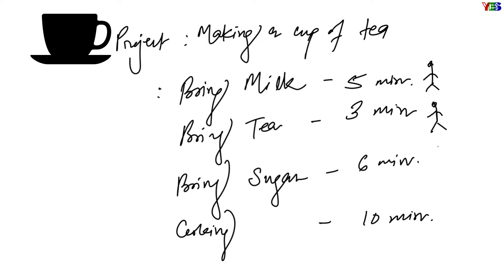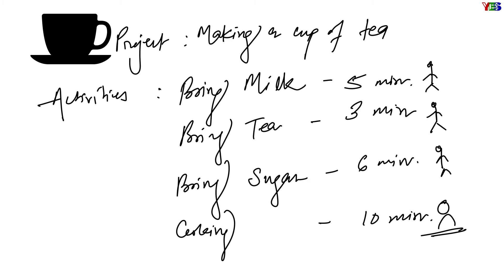Now let us consider 3 of your friends are helping you to complete this project. In this condition, it is clear that the 3 activities — bringing milk, tea, and sugar — are independent activities, since the 3 friends can do them individually and don't need to wait for each other. So these 3 activities will be performed simultaneously, but the last activity — cooking — can't happen without completion of all 3 above activities.